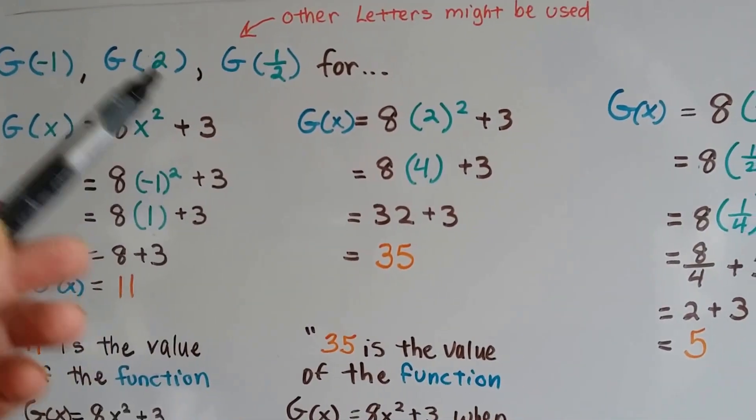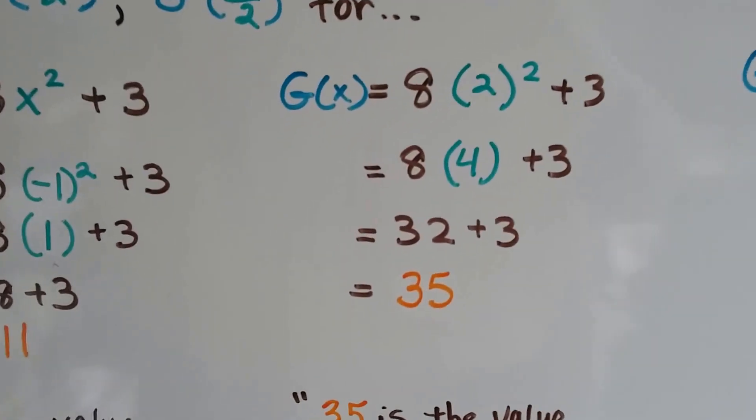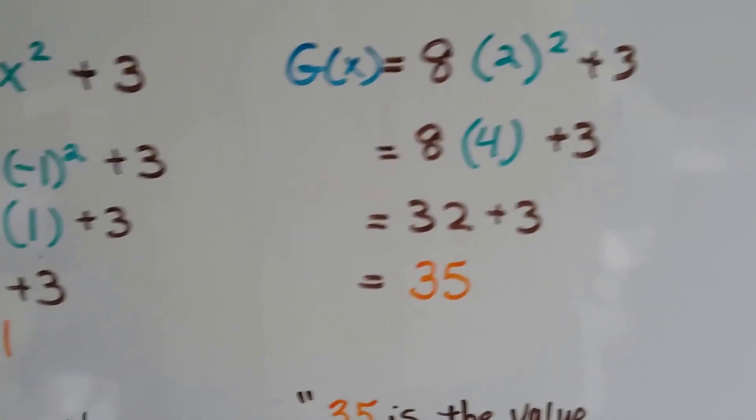For this one, if we plug in 2, 2 squared is a 4, 8 times 4 is 32, 32 plus 3 is 35.